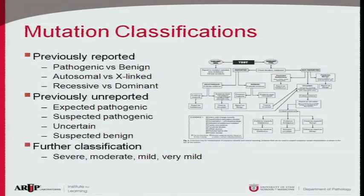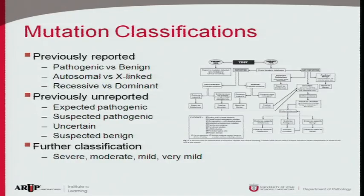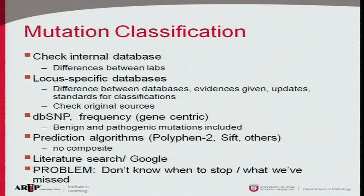If there's less certainty, we'll classify it as suspected pathogenic, uncertain, or suspected benign. We're also doing further classification on severity — not often, but at times we can describe mutations as severe, moderate, mild, or very mild. An example is pancreatitis: we look in the CFTR gene for mutations that do not cause cystic fibrosis but cause pancreatitis, requiring us to combine a severe mutation with a mild or very mild mutation in our report.